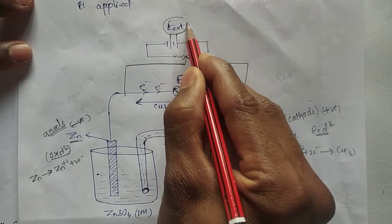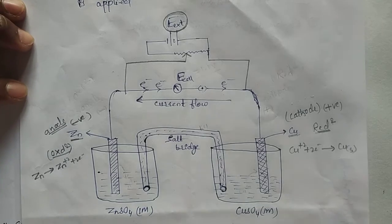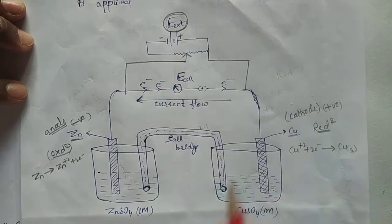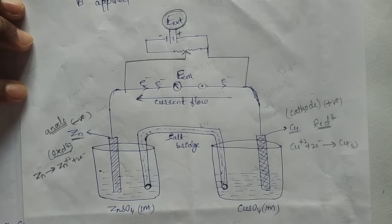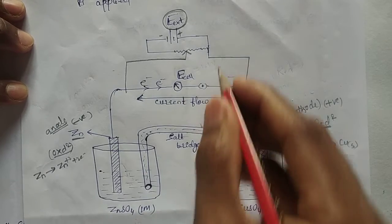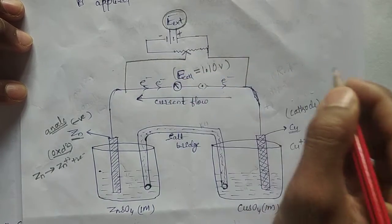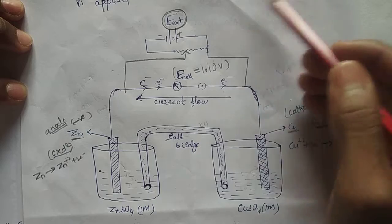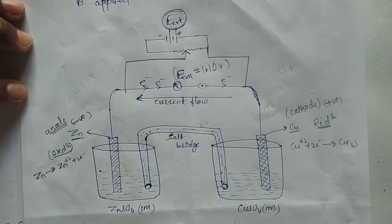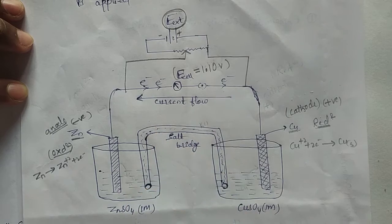Now, if an external opposite potential is applied, how does this cell work? There are different cases to consider. First, if the external opposing potential is less than the cell potential, let us see what happens.